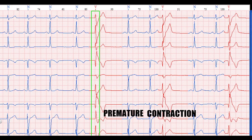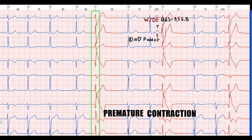Now look at the morphology. There is no P-wave in the extrasystolic complex. The QRS duration equals 3.5 small boxes or 140 ms, so the QRS is wide. Also, the premature complex has a discordant T-wave.